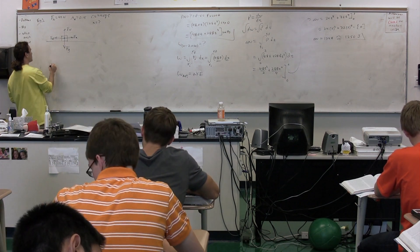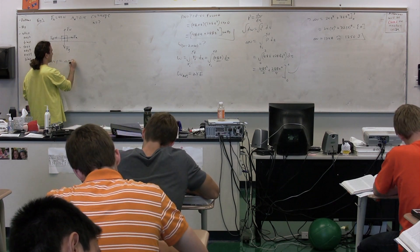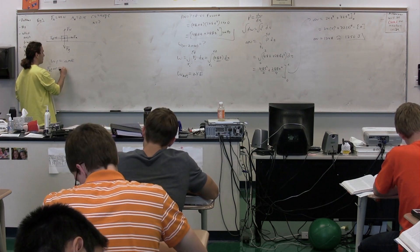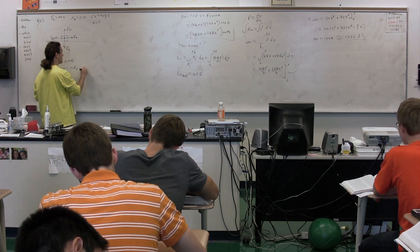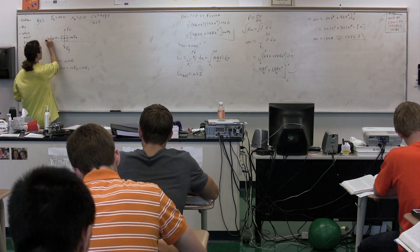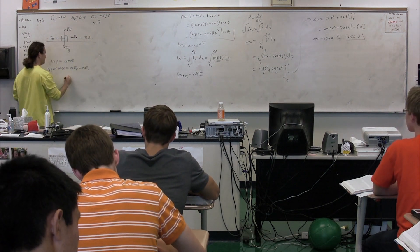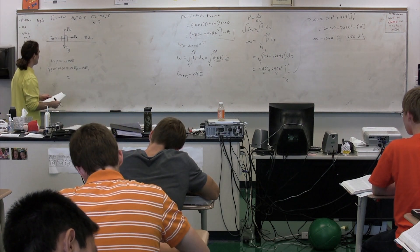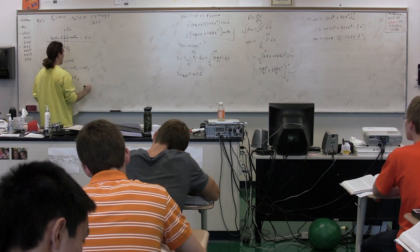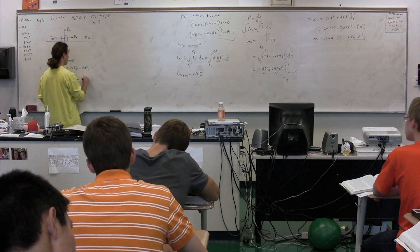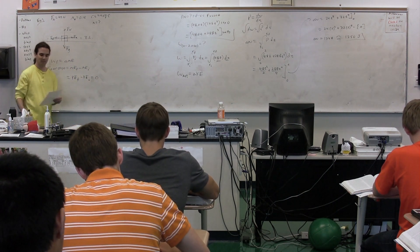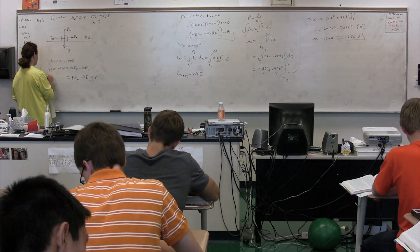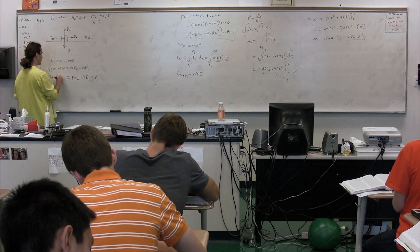We have friction, so we know the work due to friction equals the change in mechanical energy. Work due to friction is the force of kinetic friction times delta R times the cosine of theta, equal to mechanical energy final minus mechanical energy initial. If we set our zero line at the center of mass, it starts and ends with zero gravitational potential energy. It's moving at constant velocity, so kinetic energy final minus kinetic energy initial equals zero.